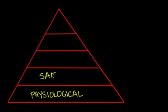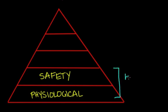Moving up, the second level is our need for safety — safety of resources, safety of employment, and health and property. Safety is a basic need also, but it can only be fulfilled once our physiological needs are met. We can call these two levels the basic levels.